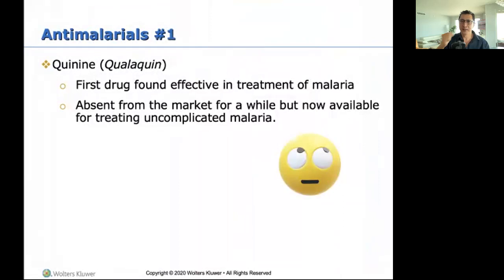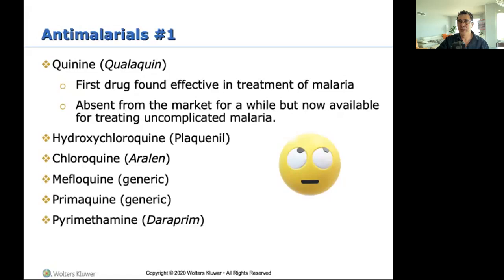Now, antimalarial drugs. Quinine and qualaquin — the first drug found effective in the treatment of malaria. It was absent from the market for a while but is now available for treating uncomplicated malaria. Next: hydroxychloroquine, which is an antimalarial drug. It was a very hot topic last year.